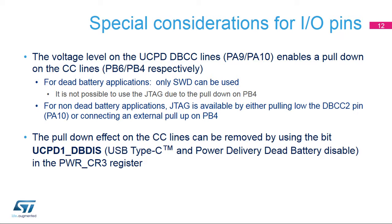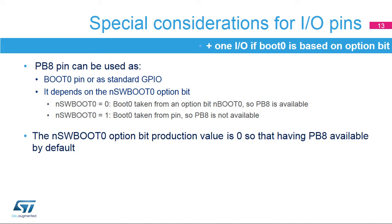Software can disable dead battery signaling by setting the UCPD1_DBDIS bit in the PWRCR3 register. PB8 may be used as a boot pin called BOOT0 or as a GPIO. Depending on the SWBoot0 bit in the user option byte, it switches from input mode to analog input mode after the option byte loading phase if N_SWBoot0 equals 1, or after reset if N_SWBoot0 equals 0. PB8/BOOT0 is not a dedicated pin — it can be used during reset time to select the boot mode and can become a general purpose I/O during run time.